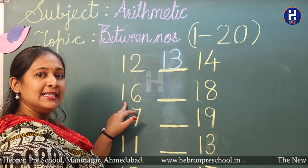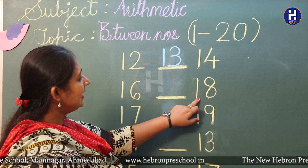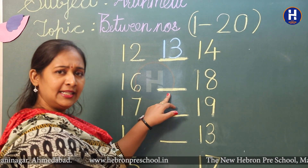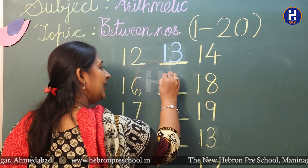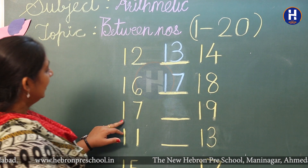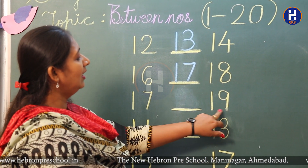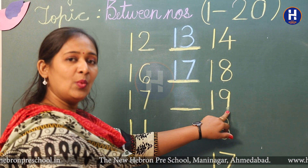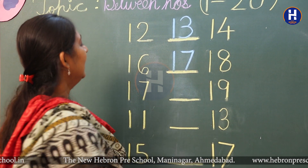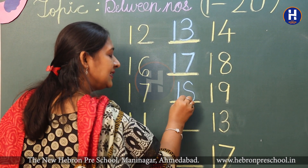This is number 16 and this is number 18. So, what comes after 16? It is number 17. So, 17 is the between number of 16 and 18. Next: this is number 17 and this is number 19. What is the middle number of 17 and 19? Yes, the between number is 18.